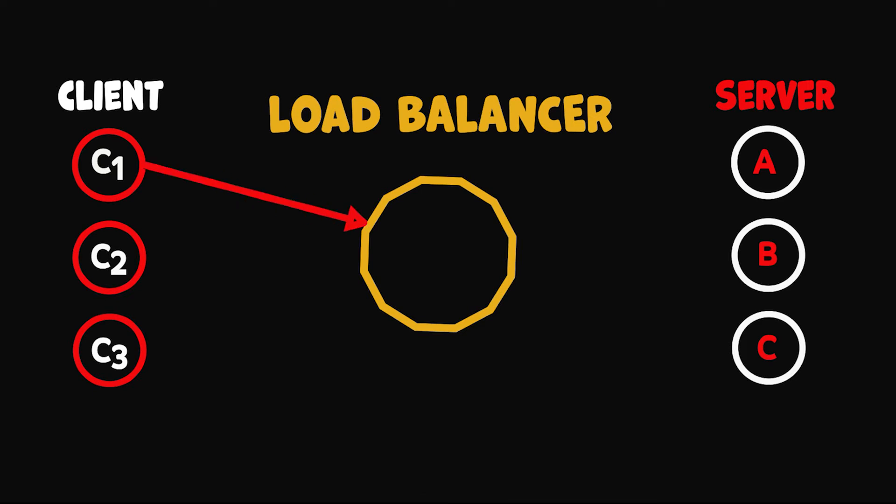Let's say client1 sends a request. The load balancer uses a round robin approach and routes the request to server A. The server checks the cache and finds it empty and performs a long operation, stores the response in cache and returns the response to client1.